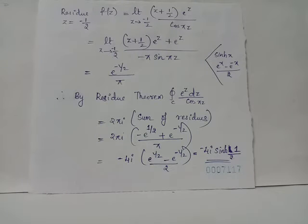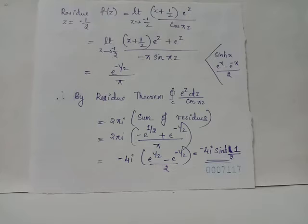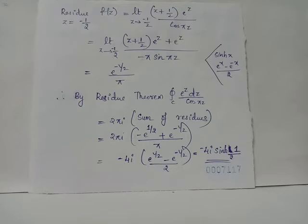Similarly, the residue of f(z) at z = −1/2 is evaluated. The limit as z tends to −1/2 of (z + 1/2)·f(z) gives a 0/0 form, so we apply L'Hôpital's rule. After application of the limit, the residue at z = −1/2 is obtained as e^(−1/2) / π.